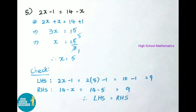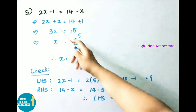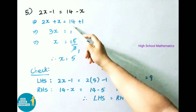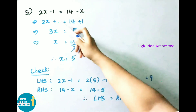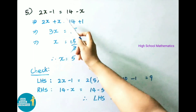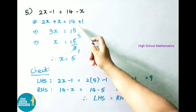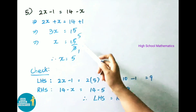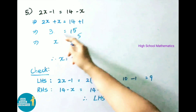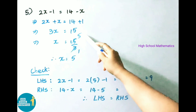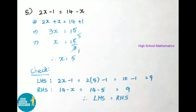Question 5: 2X − 1 = 14 − X. Transposing −X becomes +X and transposing −1 becomes +1. So 2X + X = 3X and 14 + 1 = 15. Therefore X = 15/3 = 5.